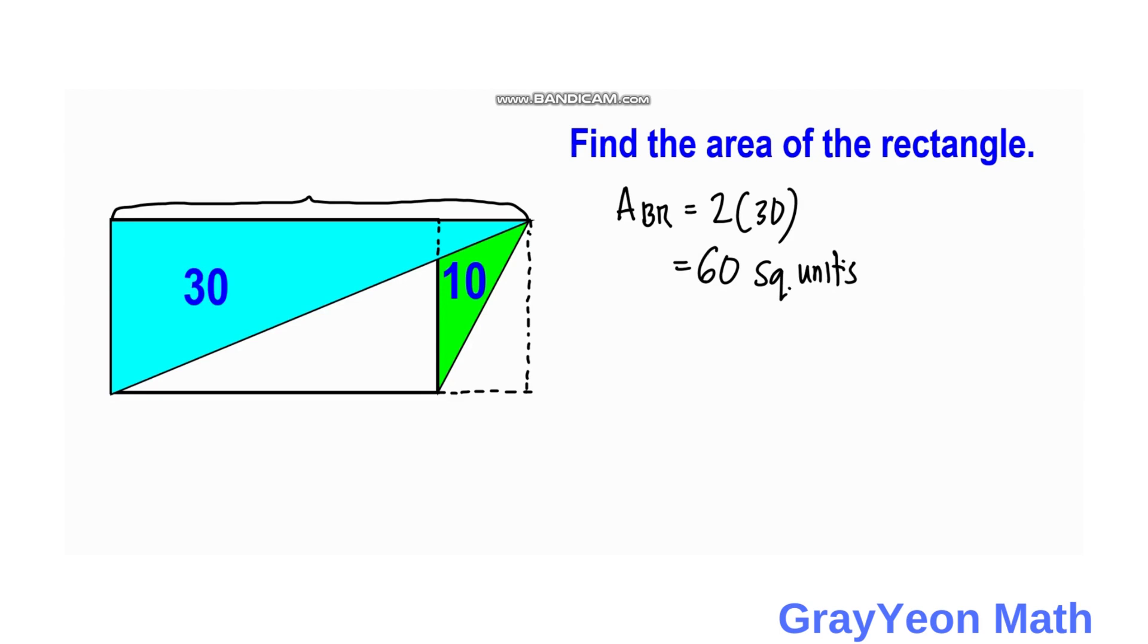While for the green rectangle, we can see that the green triangle is actually half of this rectangle, the smaller rectangle. And we just need to multiply this also by 2. So 2 times 10 is equal to 20 square units.